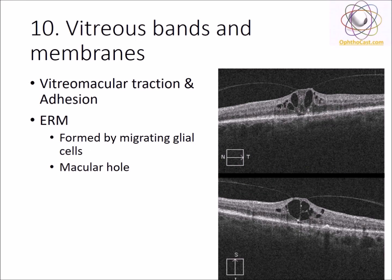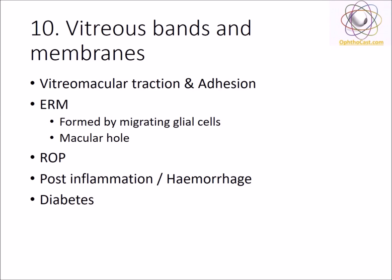The vitreous humor also causes problems while being detached. It might happen that the cortical vitreous becomes exceedingly adherent to the retina, possibly due to cellular proliferation as a result of diabetes or any other similar proliferative condition. In such cases, the vitreous forms a band causing traction on the macula. Such traction can cause disruption of the retinal anatomy, compromising vision. These bands are commonly seen in epiretinal membrane, retinopathy of prematurity, post-inflammatory conditions, post-hemorrhage, or diabetes.